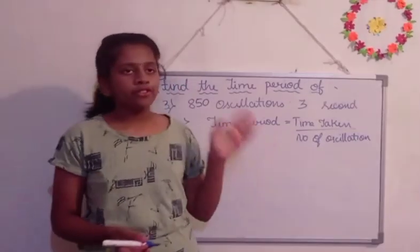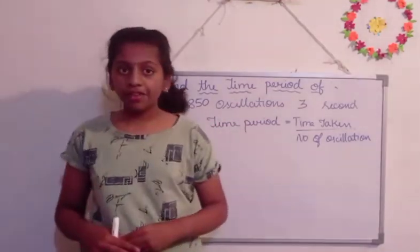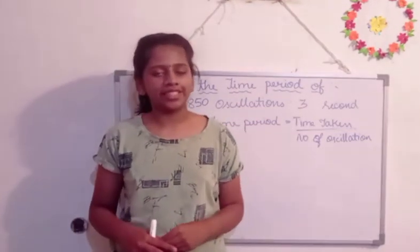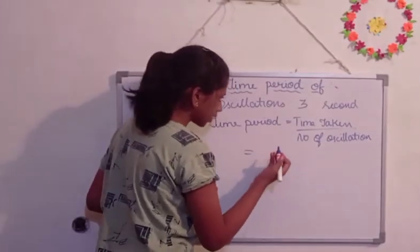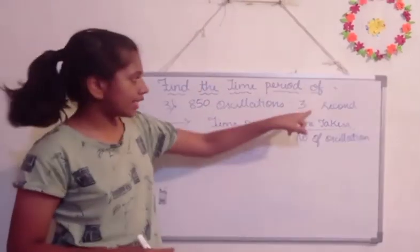So, the formula of time period is equal to time taken divided by number of oscillations. Now, let us write, time taken is 3 seconds.